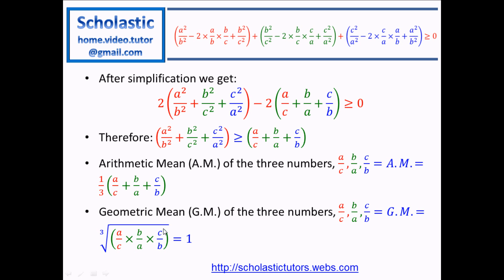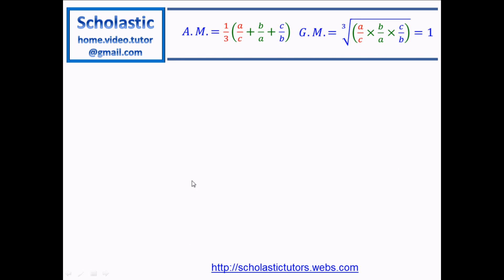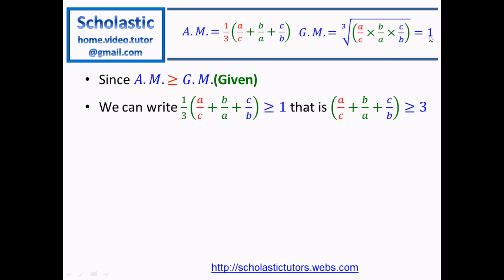If it were two numbers we would take the square root, and for four numbers we multiply and take the fourth root. Incidentally, if you take the geometric mean of these three numbers, A and A cancel off, B and B cancel off, and C and C cancel off — so this term becomes 1, and the cube root of 1 equals 1. Since arithmetic mean is always greater than or equal to geometric mean, which is 1 here, we get A over C plus B over A plus C over B divided by 3 is greater than or equal to 1, meaning A over C plus B over A plus C over B is greater than or equal to 3.